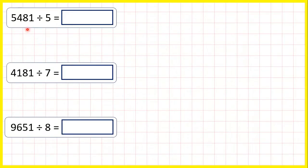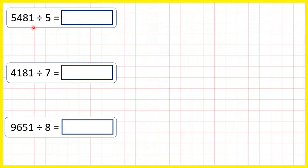Here we're dividing a four-digit number by a single-digit number, but for these questions we're going to get remainders in our answer. We can see straight away that we'll have a remainder, because we're dividing by 5, but all multiples of 5 always end in a 5 or a 0, but this number here ends in a 1. So we can set out the division as a short division.